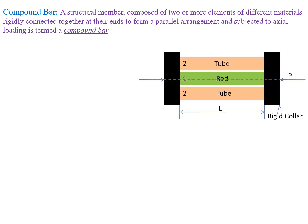In the diagram, we can observe that a rod is enclosed within a tube, and both are rigidly connected at their ends. Moreover, both the tube and the rod are made of different materials. This type of member is called a compound bar, and such a section is also known as a composite section.